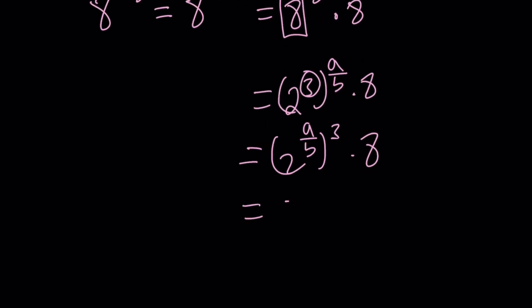So 2 to the power a over b is equal to 3 from here. And if you replace that with 3, 3 to the third times 8, the answer will be 27 times 8. And 27 times 8 is going to equal 216 as before.